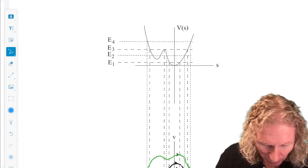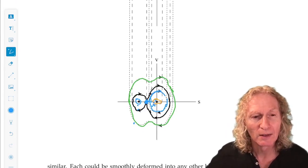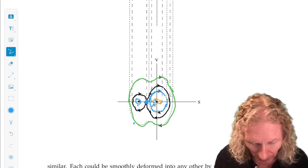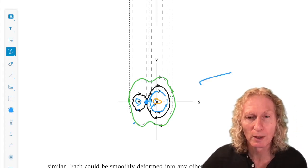So to go back to the separatrix, qualitatively different motions, it separated, in this particular example, three distinct families of periodic solutions.